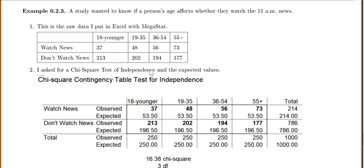I asked for a chi-square test of independence and also asked for the expected values. So this is what it gives me. You'll notice my headings are still the same: 18 up to 55 and they're either watch news or don't watch news. The bold ones are the observed, what I had here, and the non-bold ones down below are my expected values.